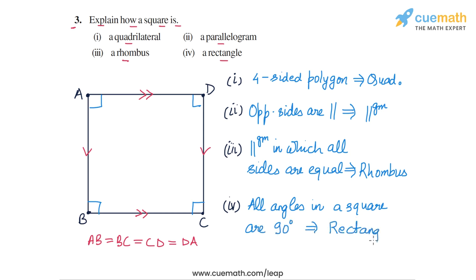So a square is a quadrilateral, it is a parallelogram, it is a rhombus, and it is also a rectangle. That completes question number 3.